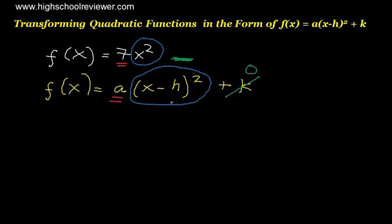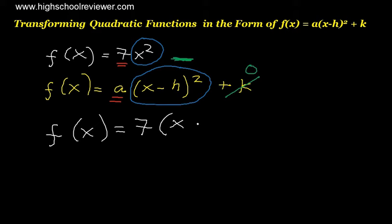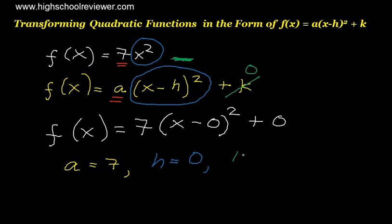k here will be equal to 0. So, transforming our original equation, this will now be f(x) equals — our a is 7, so this will be 7. And since this is x squared, we will have the quantity of x. Since there is no h, h here is 0 also. So x minus 0, raised to the power of 2, plus our k here, which is 0. Our a equals 7, our h equals 0, and our k equals 0. Therefore, f(x) equals 7 multiplied by the quantity of x minus 0 raised to the power of 2 plus 0. This is our final answer.